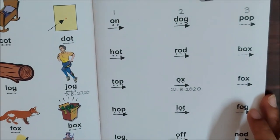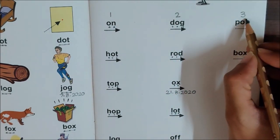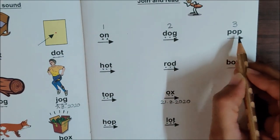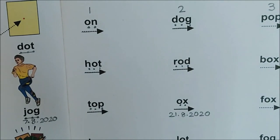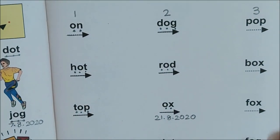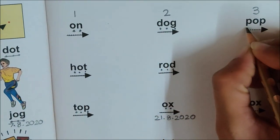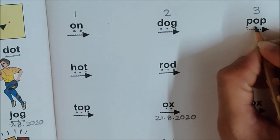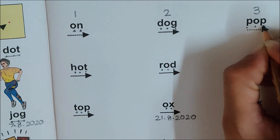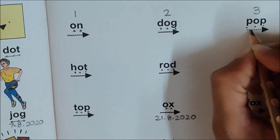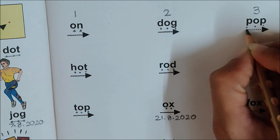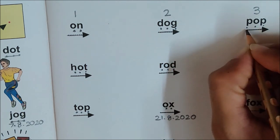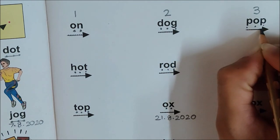Now let us go to column three. The first word here is this. So children, what is the first sound in this word? P. So put one dot for P. What is the next sound? O. What is the last sound? P. Now join and read. P. O. P. Pop. P. O. P. Pop.